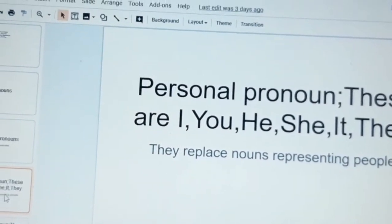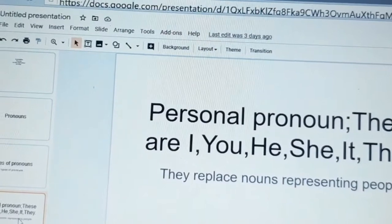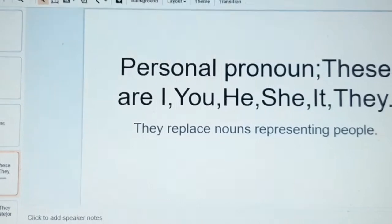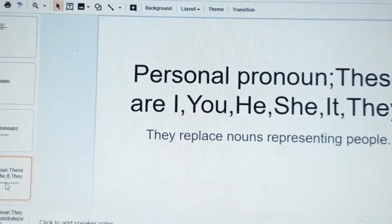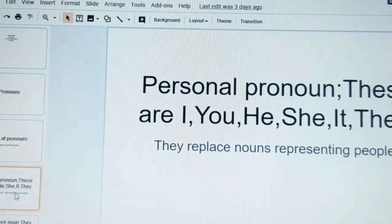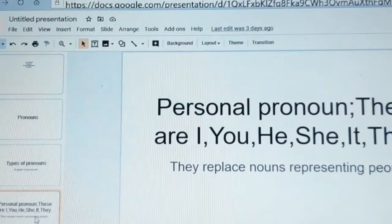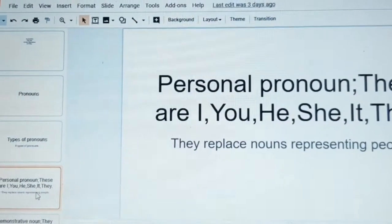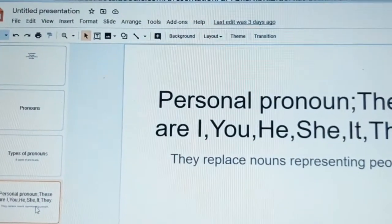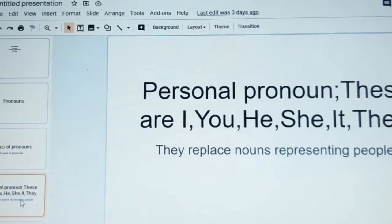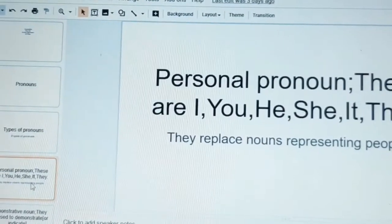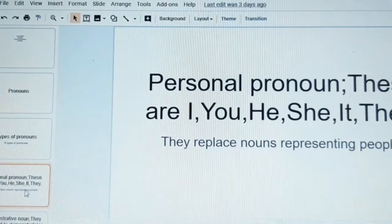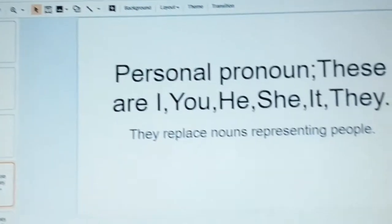Personal pronouns are of three types. First person pronouns: I and we — I is for singular, we is used for plural. Second person pronoun: you — used for both singular and plural. Third person: he, she, it — these three are used for singular. And they is used for plural. These are all subjective pronouns, meaning they are used in the place of the subject.